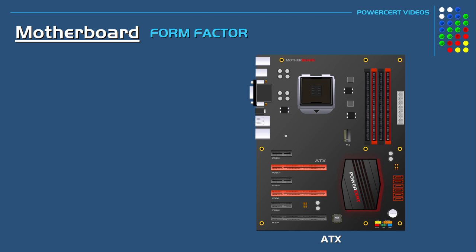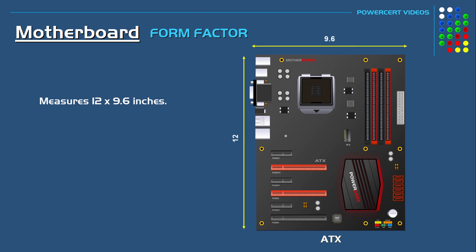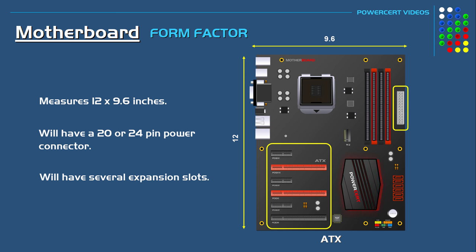A standard ATX motherboard is 12 by 9.6 inches and they will have either a 20 or, in modern motherboards, a 24-pin power connector. They will also have several expansion slots. For example, this particular ATX motherboard has six expansion slots.